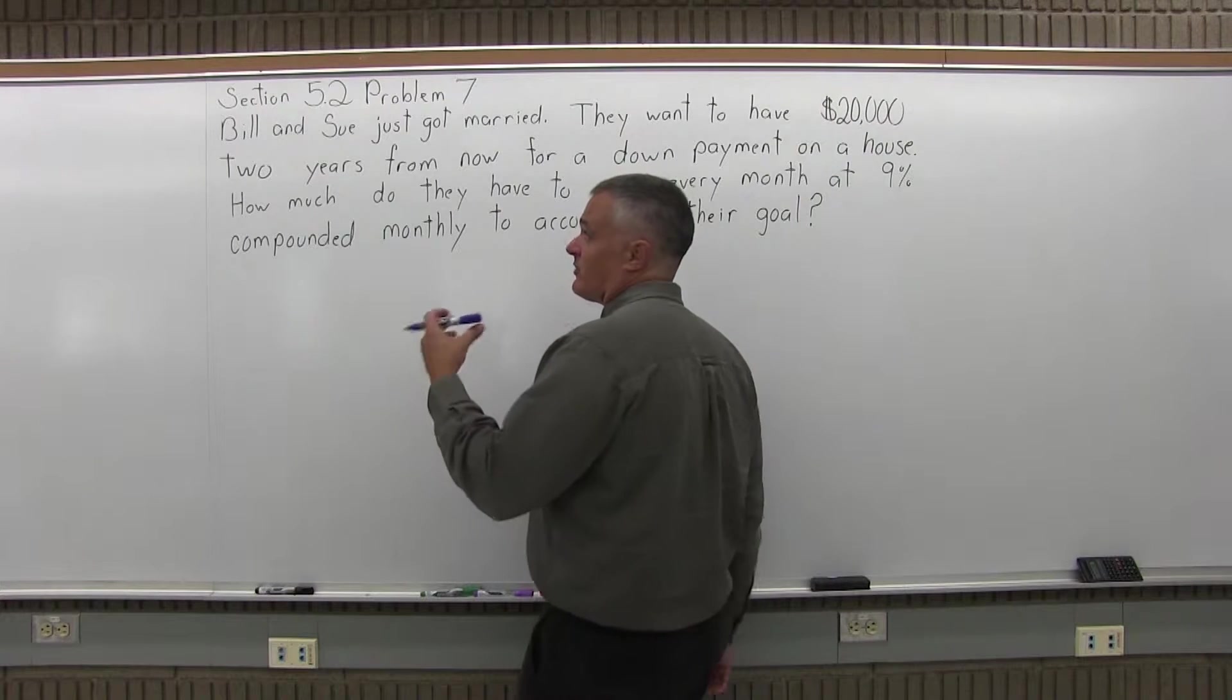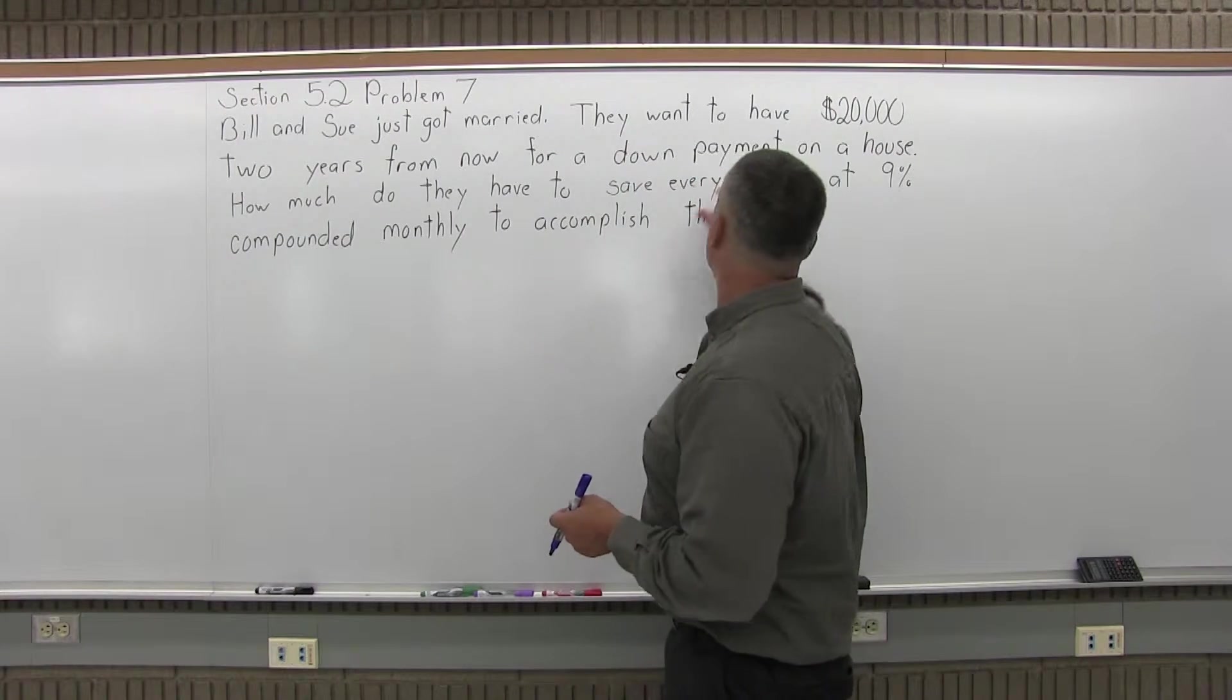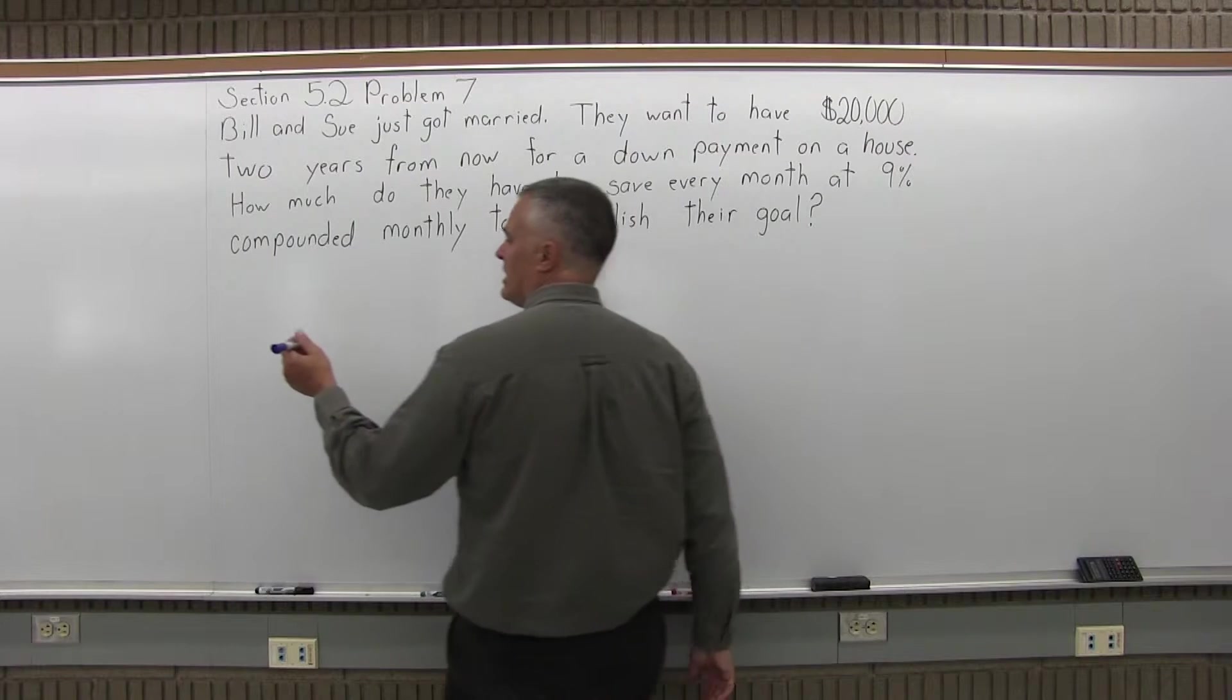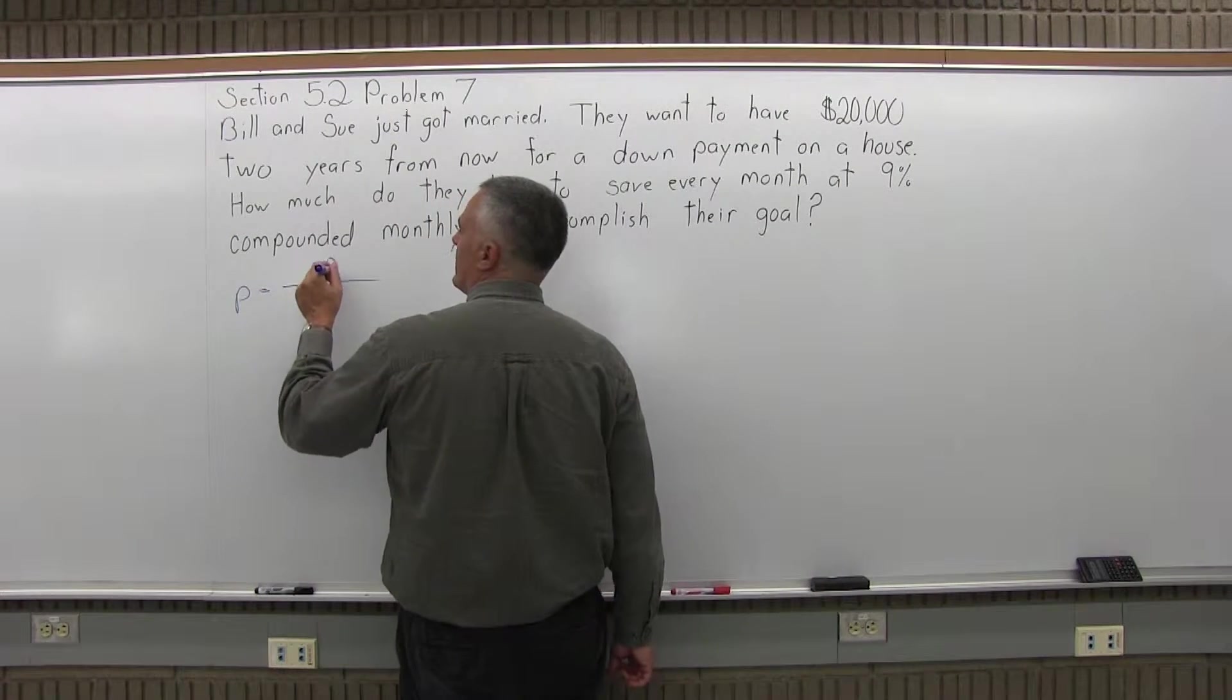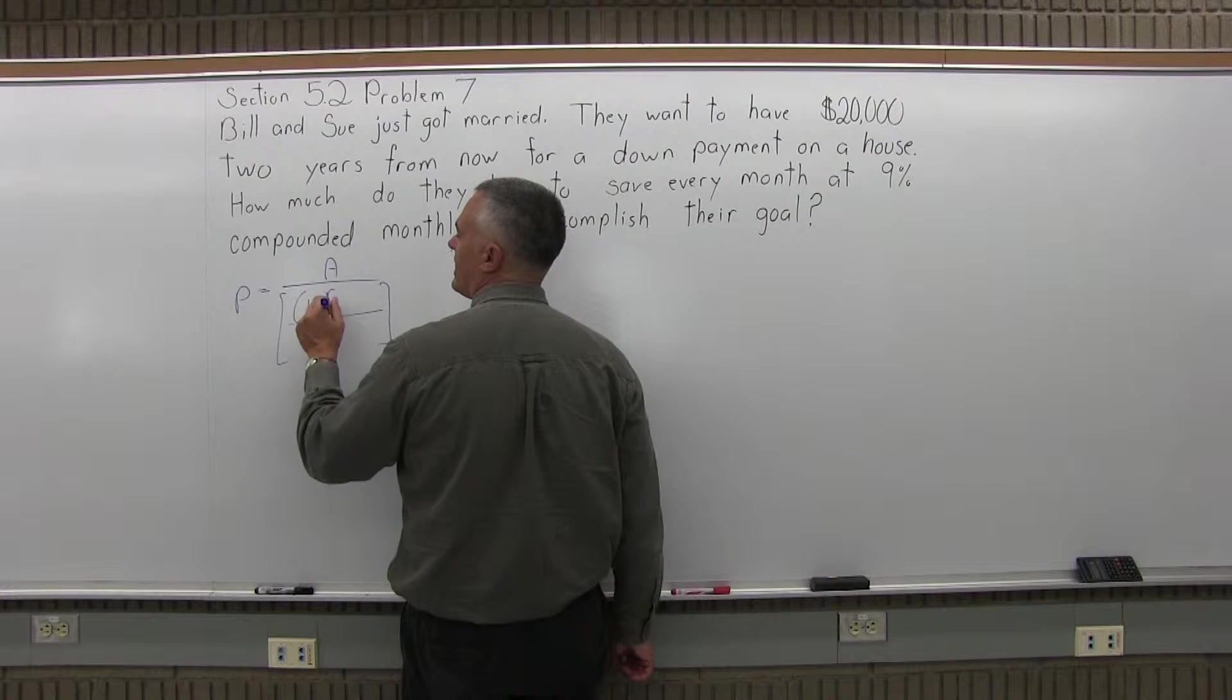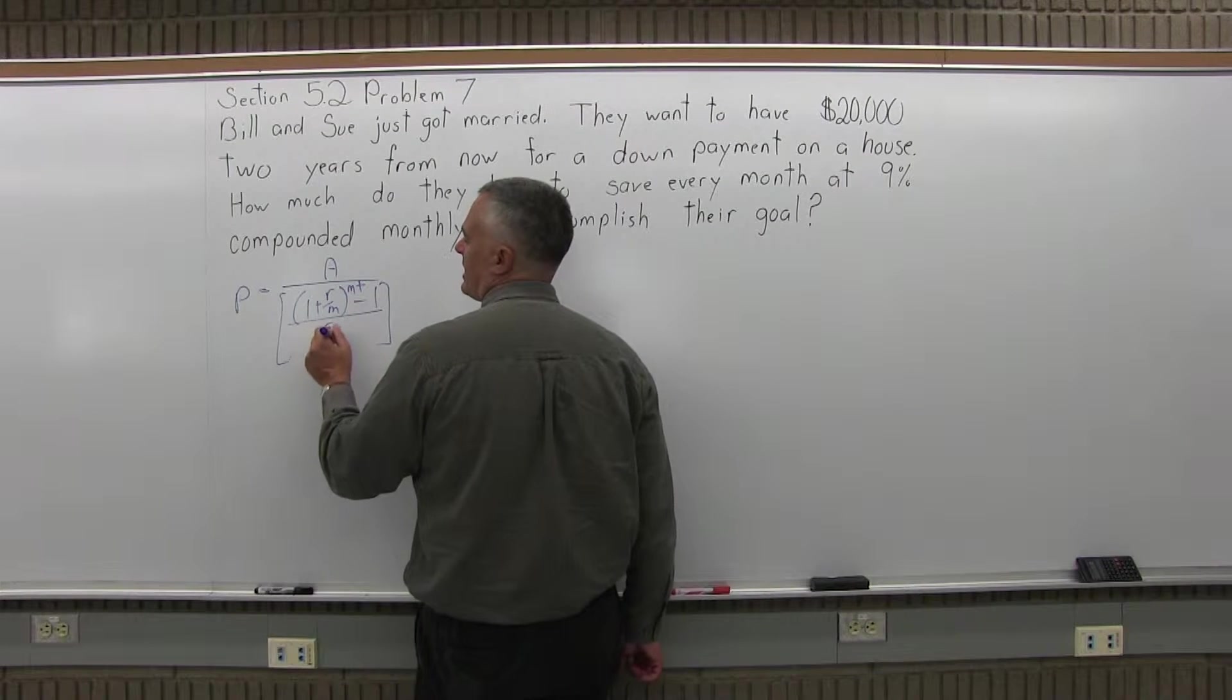So let's start with the problem. First of all, what type of formula do we use? We use the sinking fund formula because we know what the goal is and we want to figure out how much we save on a regular basis to reach it. We want to get $20,000. So the sinking fund formula is P equals A over some brackets and in the brackets we have 1 plus R over M to the M times T power minus 1 divided by R over M.